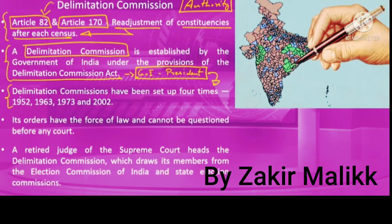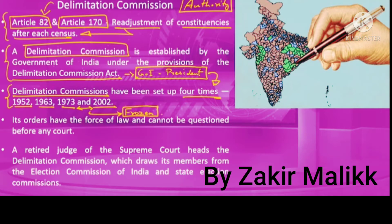Till date, at the national level, four delimitation commissions have been set up — in 1952, 1962-63, 1972-73, and 2002. Between 1972 and 2002, delimitation was frozen to facilitate family planning programs and population stabilization initiatives. The same has been done after the 2002 delimitation, freezing it until 2026 in order to achieve population stabilization.